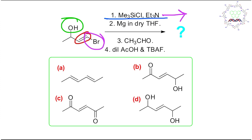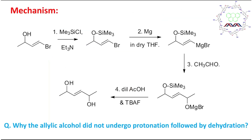I have already discussed many dedicated lectures on this topic. As I told you, the first step is silyl ether formation, meaning an O-Si(Me)₃ bond formation. One chlorine and one hydrogen are eliminated, ultimately forming HCl, which is quenched by the triethylamine. That is the importance and role of triethylamine in this reaction.